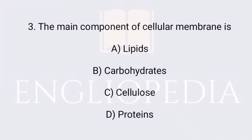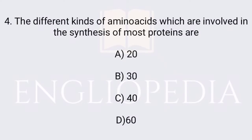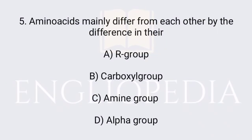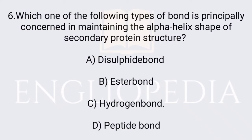The main component of the cellular membrane is proteins. The different kinds of amino acids which are involved in the synthesis of most proteins are 20. Amino acids mainly differ from each other by the difference of their R group.